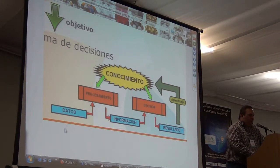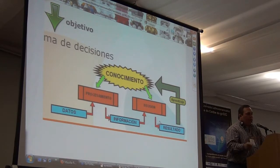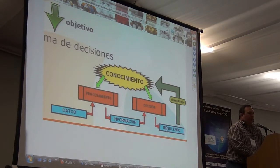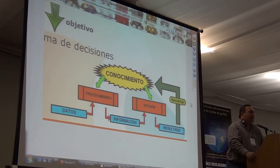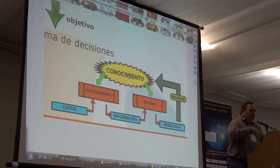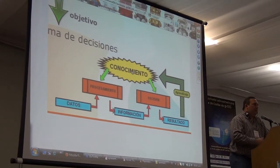La combinación de los datos, cuando combino datos — que viene siendo a nivel del sistema de información el procesamiento de datos — genera información. Y la información nos va a permitir, en base a la información, tomar decisiones. Una vez que tomamos decisiones, evaluamos el resultado que obtenemos a partir de esa decisión. Ese resultado, bien sea positivo o negativo, nos va a generar necesariamente un aprendizaje. Ese aprendizaje se convierte en conocimiento, que debe ser volcado al procesamiento y a la toma de decisiones. Es un ciclo constante.